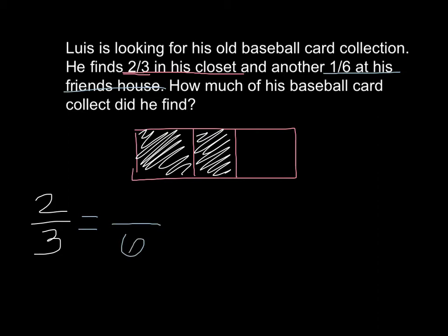I know that if I multiply my denominator by two, three times two gives me six. And whatever I do to my denominator, I also want to do to my numerator, so I multiply two on top, and I get a final answer of four-sixths.